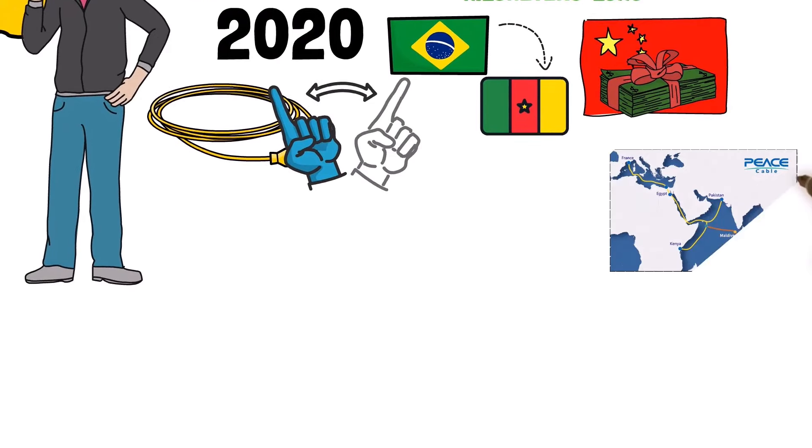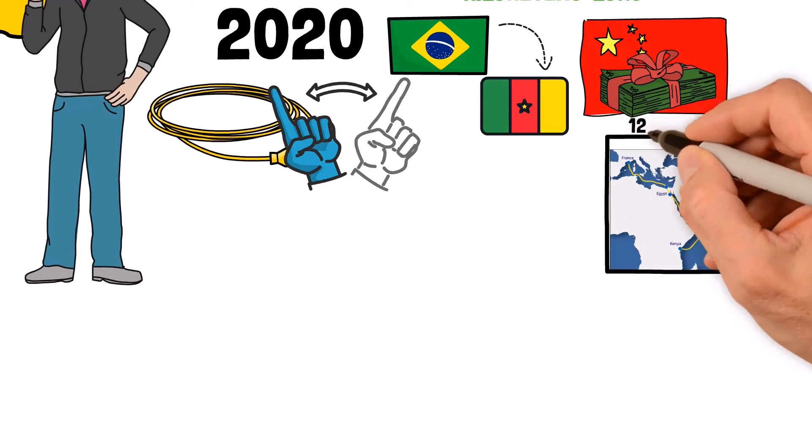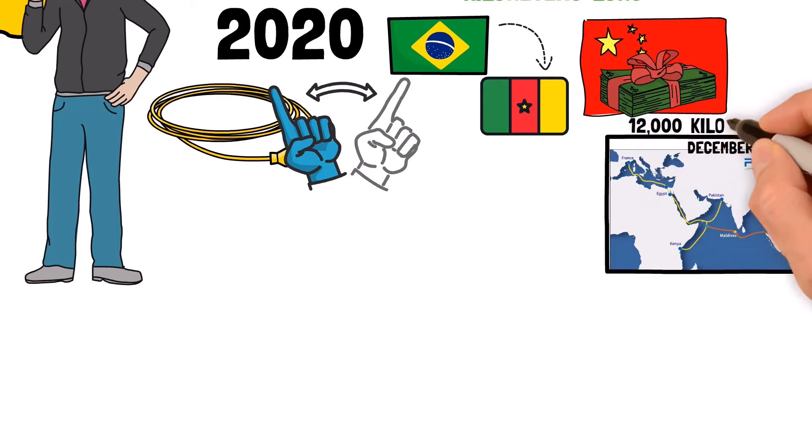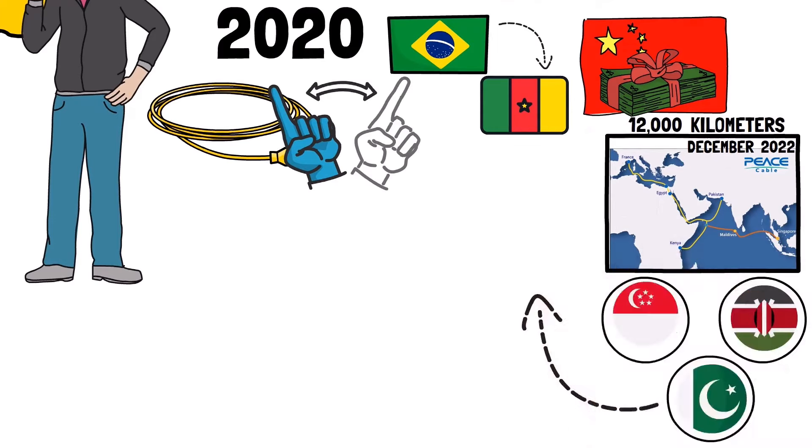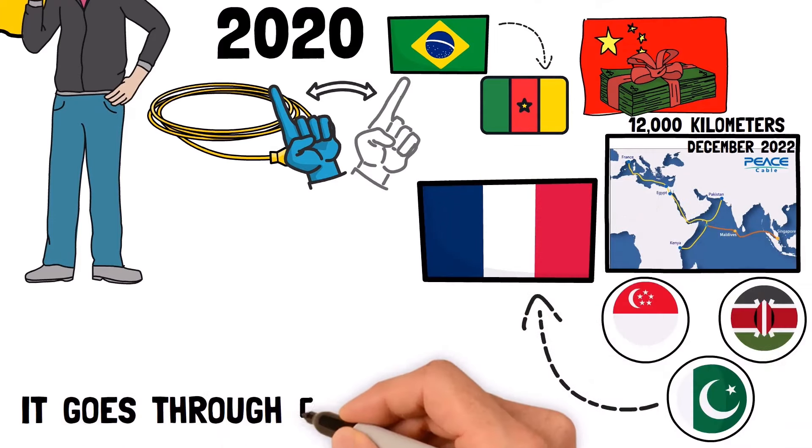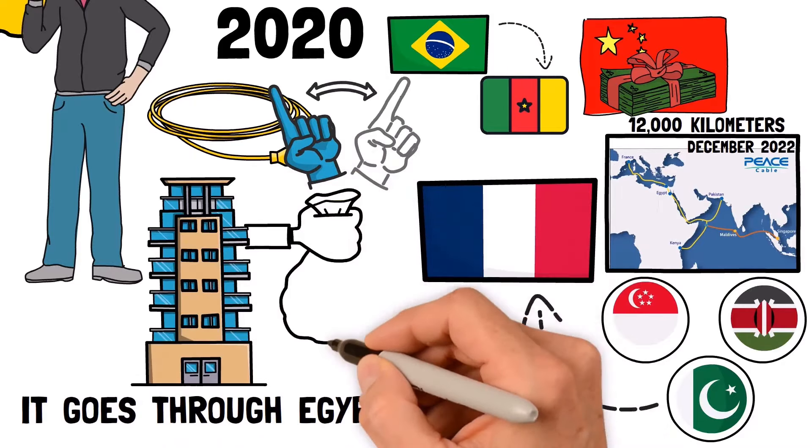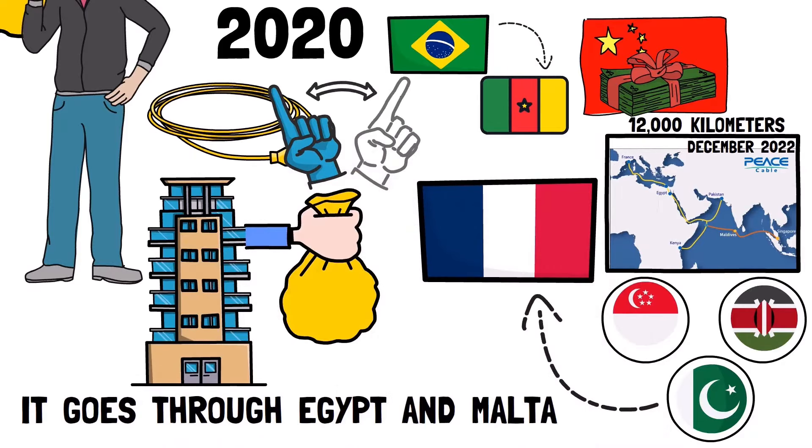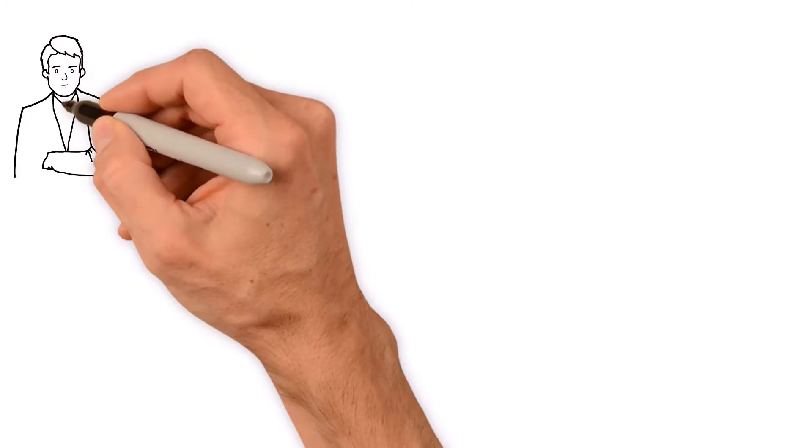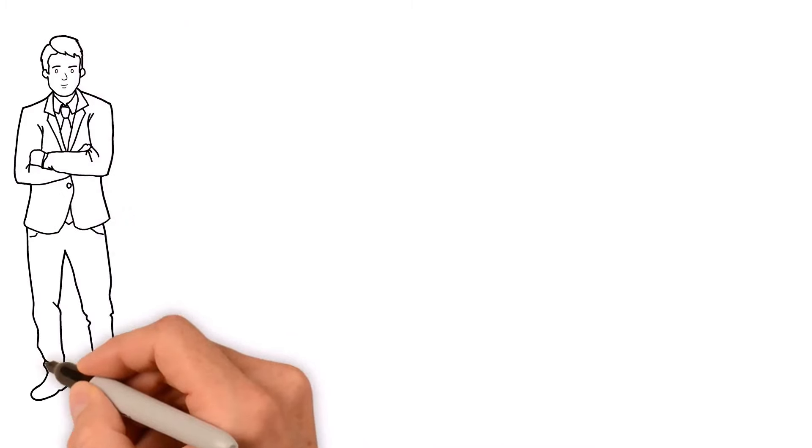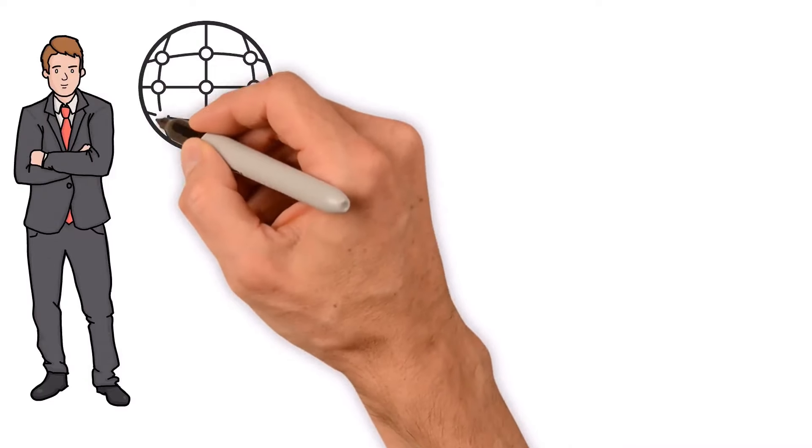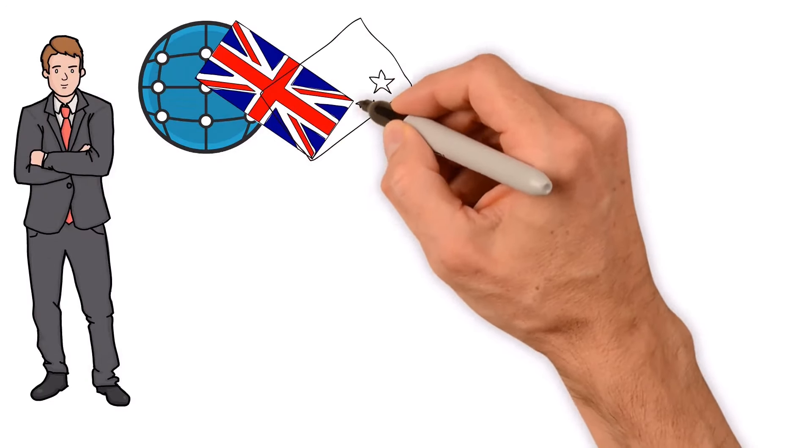One rare example is the Peace Cable which started in December 2022. It's a super long cable, 12,000 kilometers, and it connects Singapore, Kenya and Pakistan to France. It goes through Egypt and Malta. Chinese companies paid for and built the whole thing including HMN Tech. France said yes to the project because they wanted to be more independent when it comes to their internet stuff, especially with tensions between the US and China.